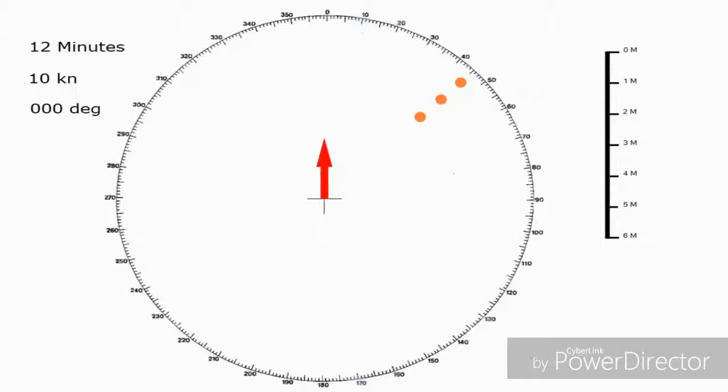So what we're going to do to immediately find the CPA is we can join a line straight through the middle and in this particular example the closest point of approach is zero. If we do nothing there will be a collision.